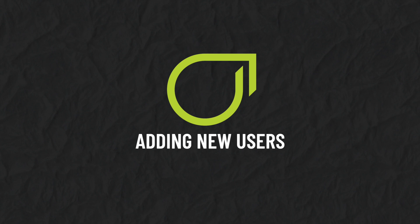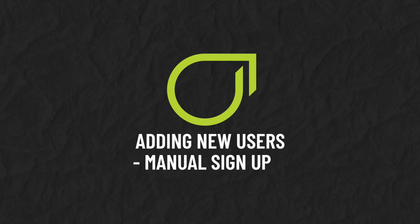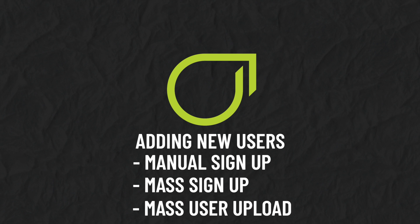Adding new users. There are three ways to add new users to your account. You can add new users manually, one by one — we call this manual sign-up. You can invite large numbers of users to register their own accounts — we call this mass sign-up. Or you can upload users using a CSV file — we call this mass user upload. Here is how these sign-up methods work.